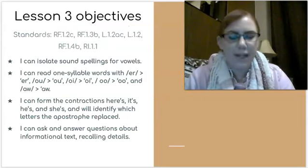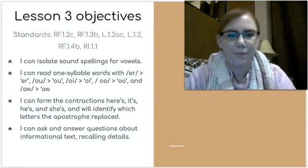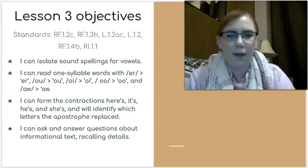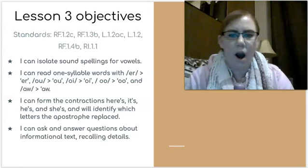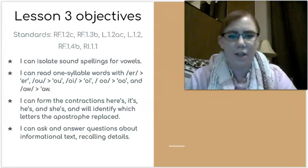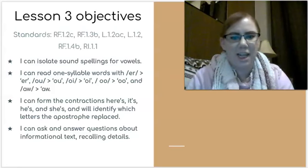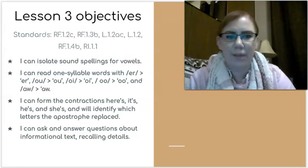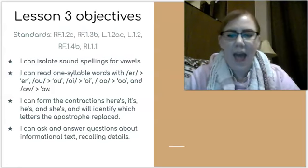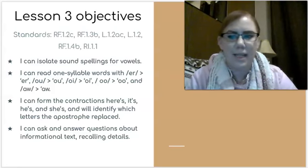Our objectives for today are to isolate the sound spellings for vowels, read one-syllable words with er, ow, oi, oo, and aw, form the contractions here's, it's, he's, and she's and identify which letters the apostrophe replaced, and ask and answer questions about an informational text and recall details.